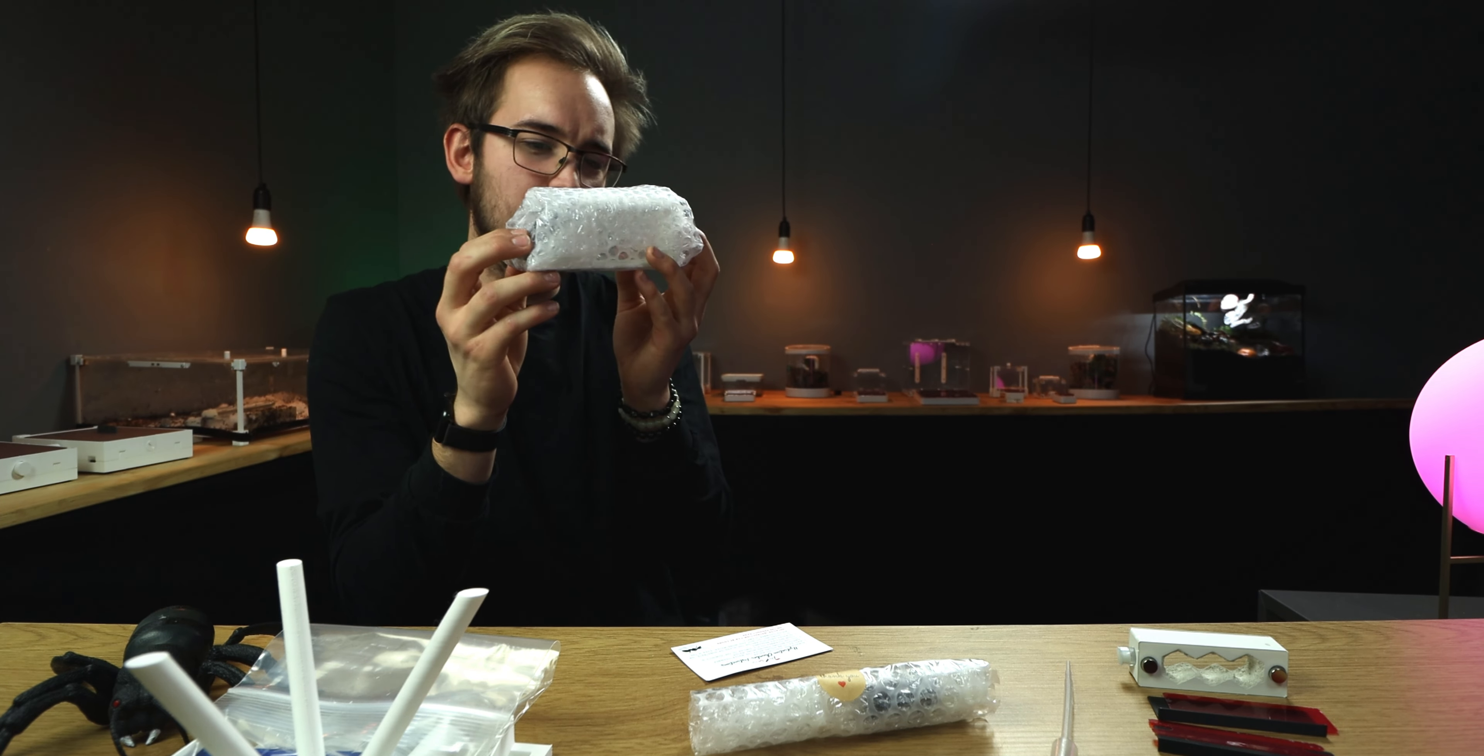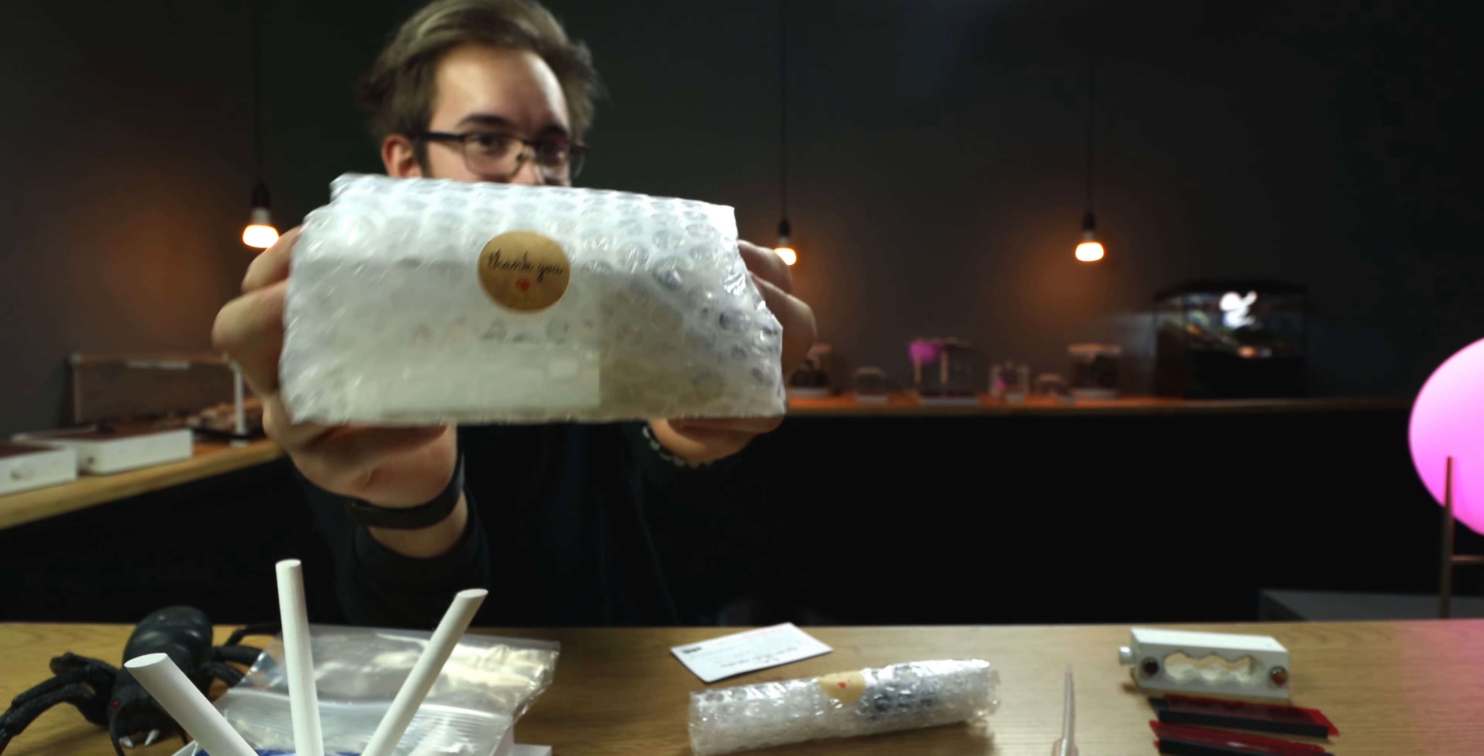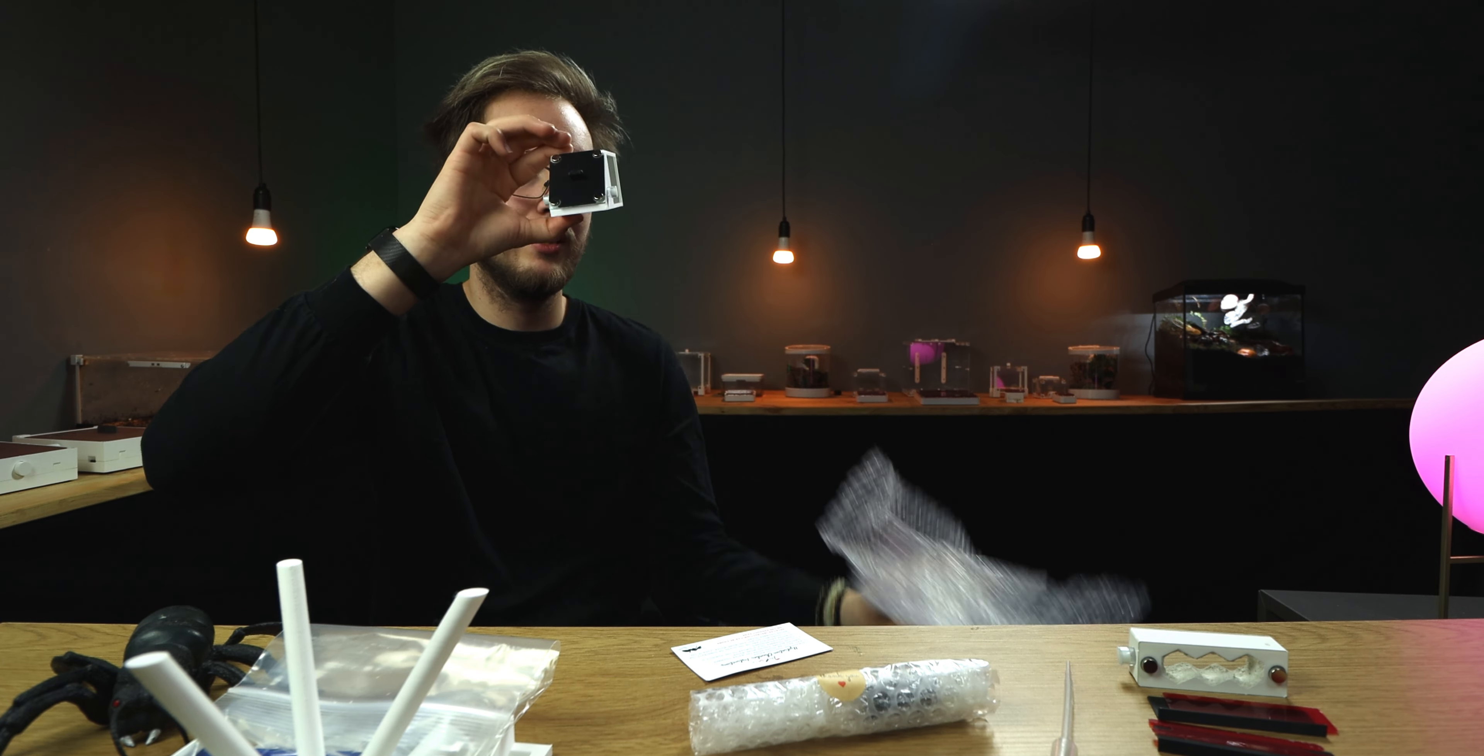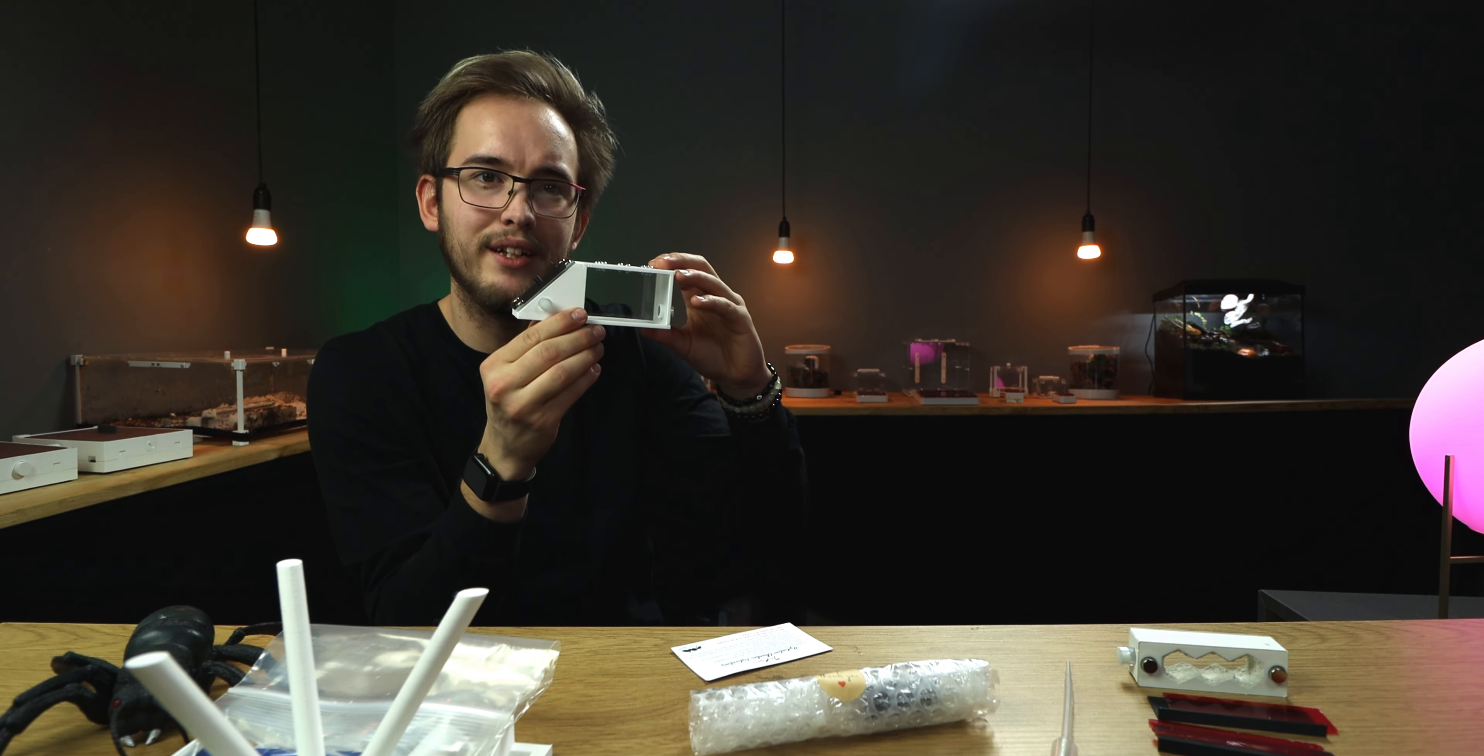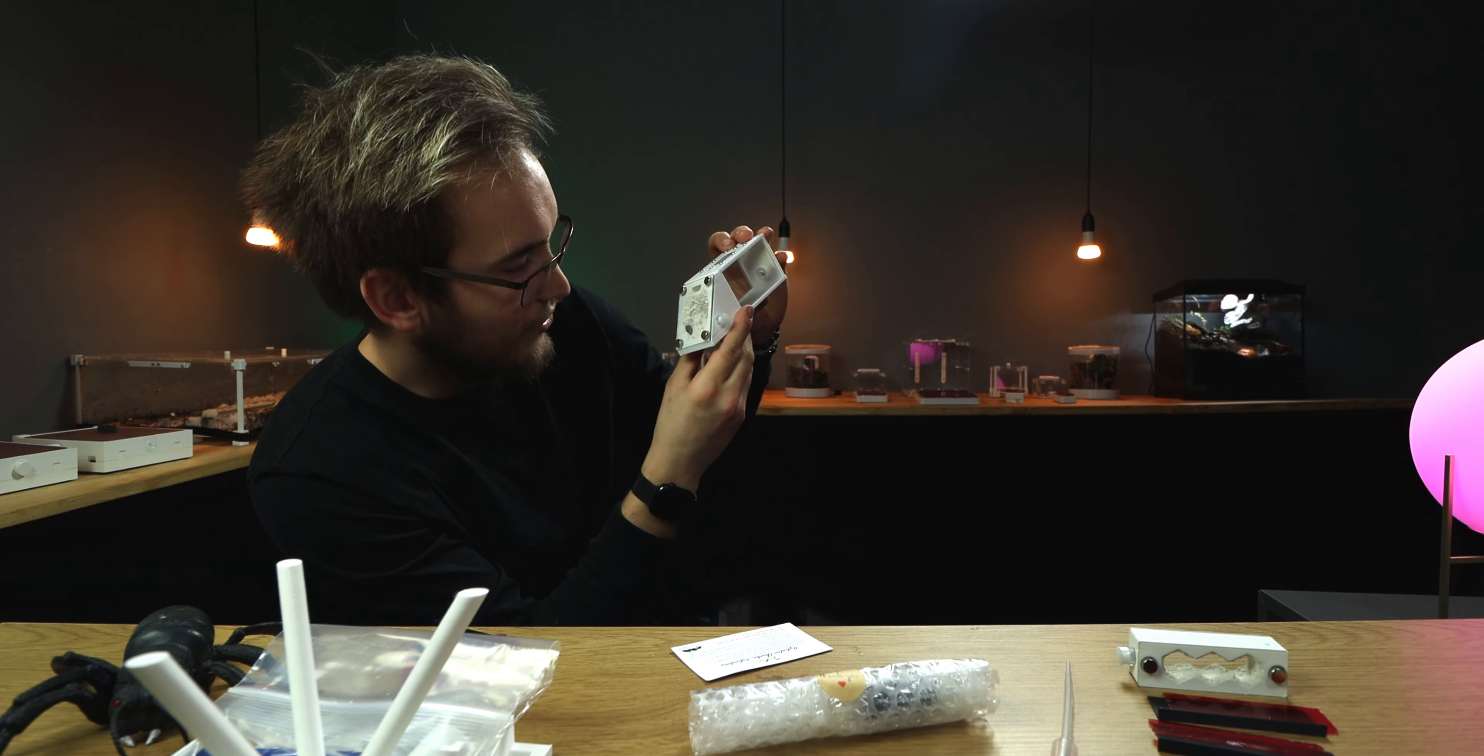So next under this is this little mini jumbo all-in-one formicarium. Now this has an outworld and a nest all built together. Once more, we also have the little thank you sticker. Very cute. And with it peeled off, everything simply comes apart. Damn.